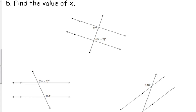Alternate because they're on opposite sides of our transversal and interior because they are inside of the parallel lines. So, what's true about alternate interior? Are they the same? They are the same. So, we set them equal to each other. 92 is equal to 6x plus 2.